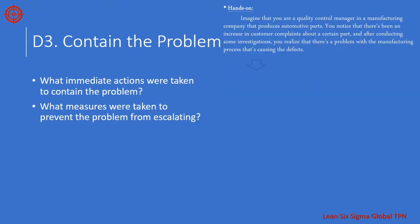The third step is to contain the problem. This means taking immediate action to prevent the problem from spreading or getting worse. It could involve stopping production, quarantining affected products, or other measures necessary to prevent the problem from getting out of control. In our example, the team takes immediate action — they stop production of the parts and quarantine any affected parts to prevent them from reaching customers.